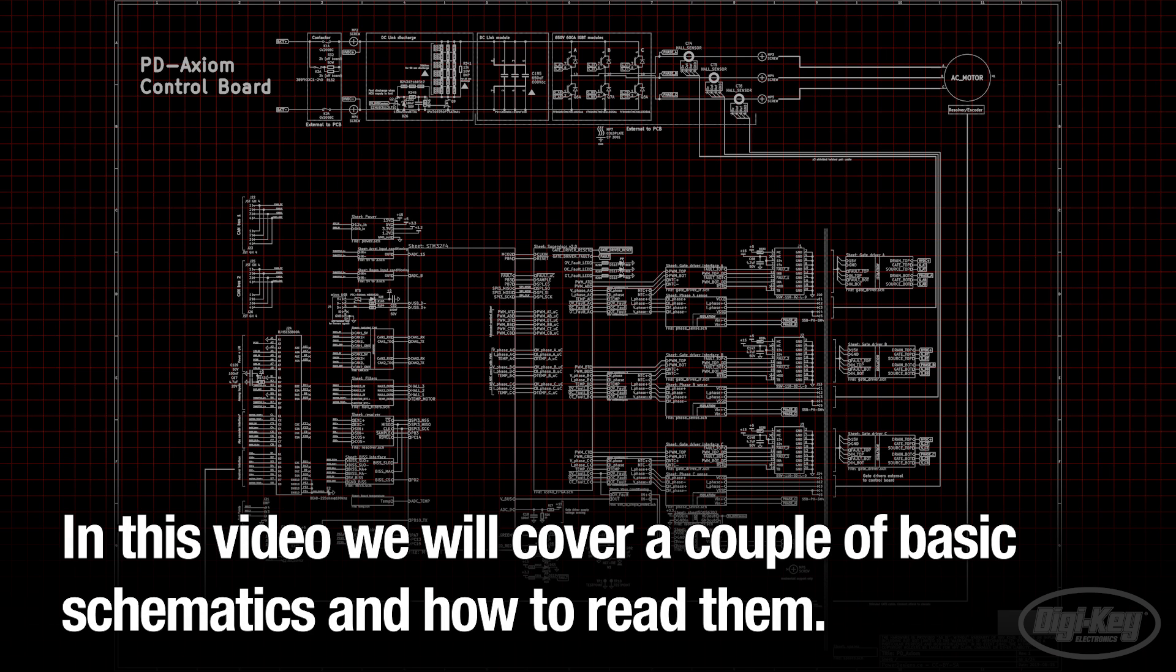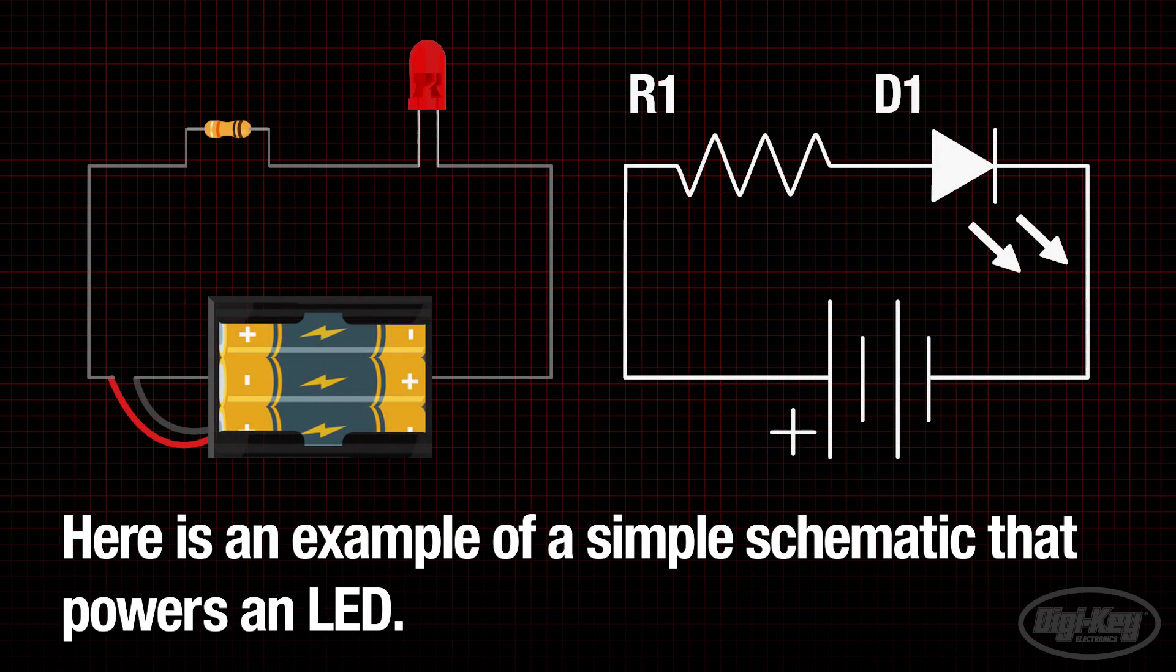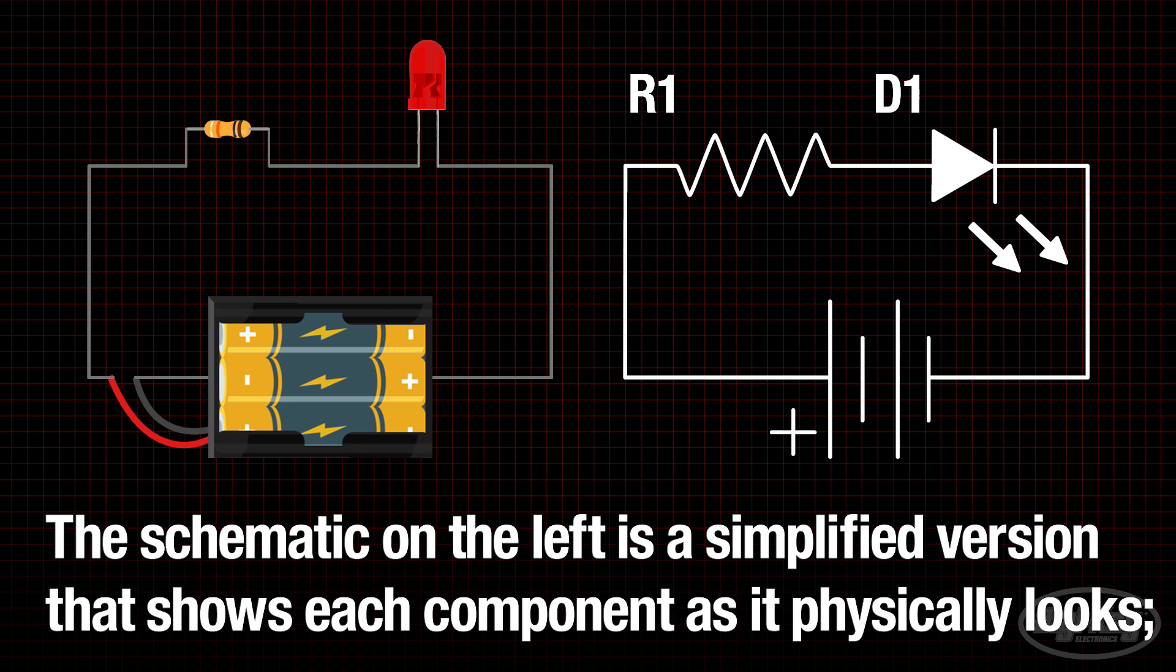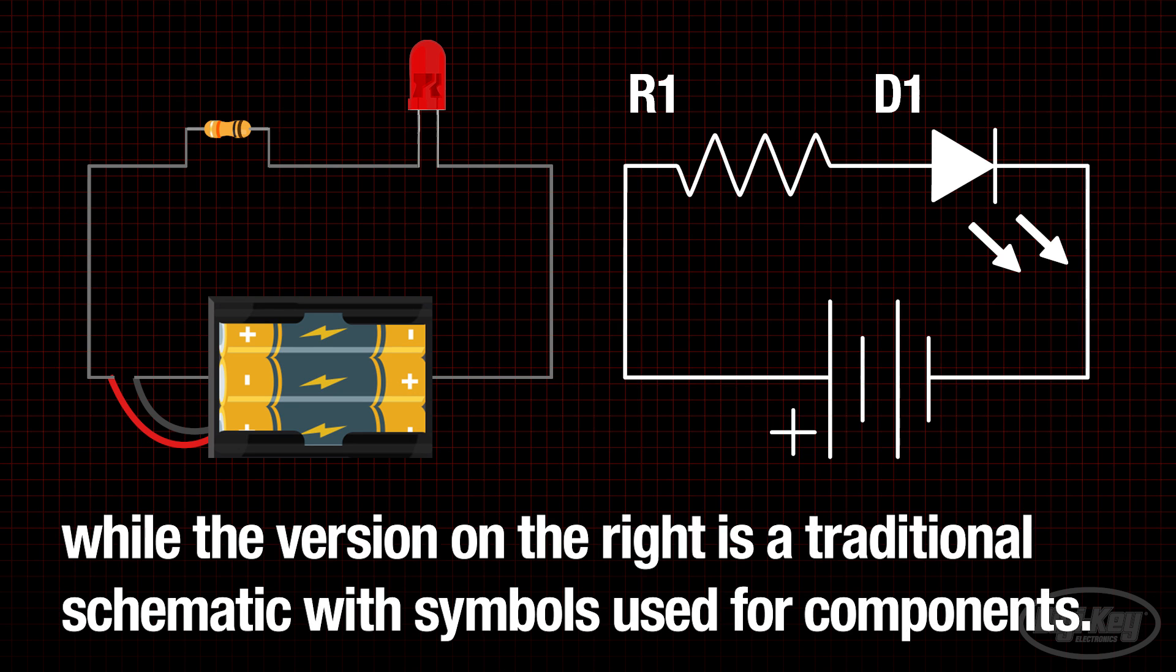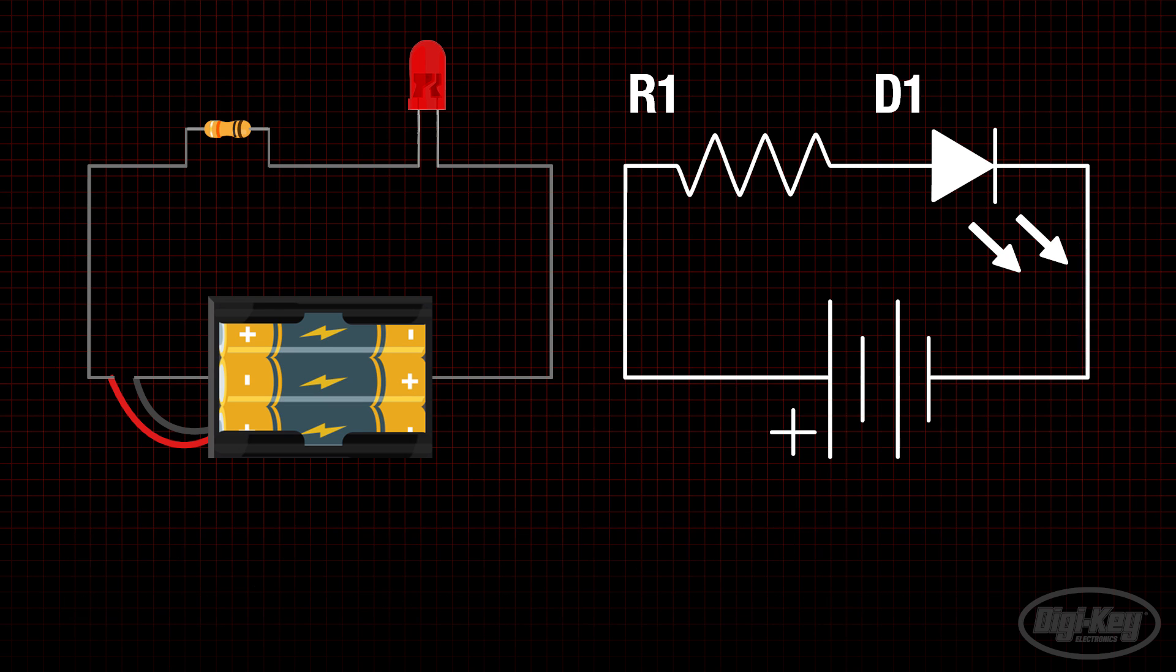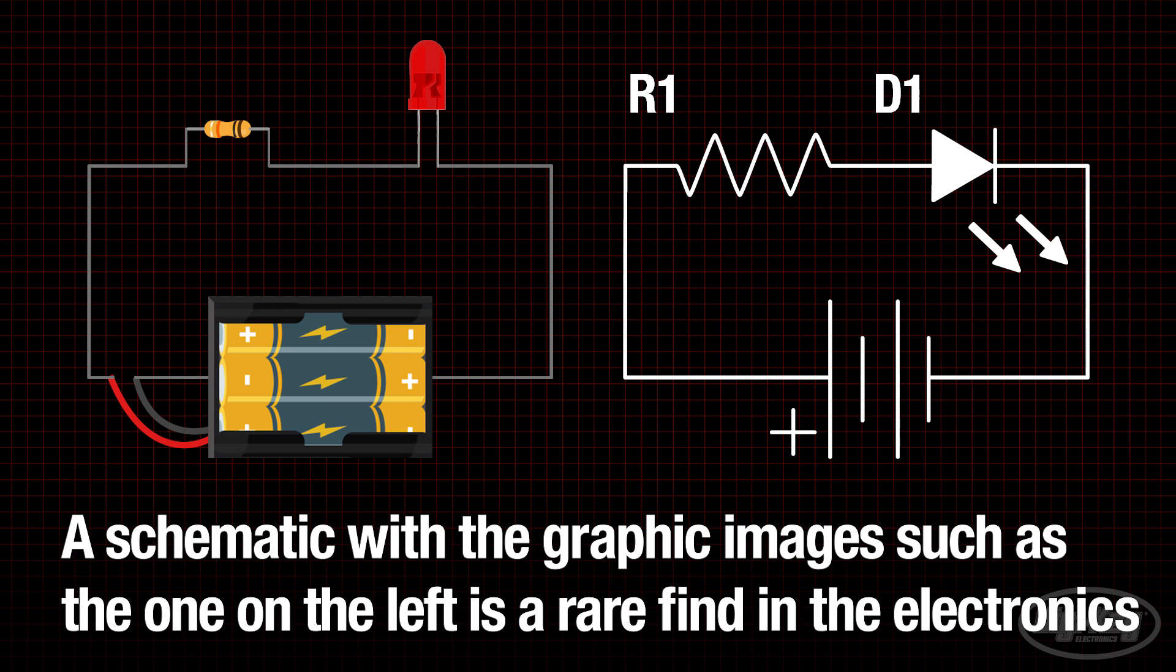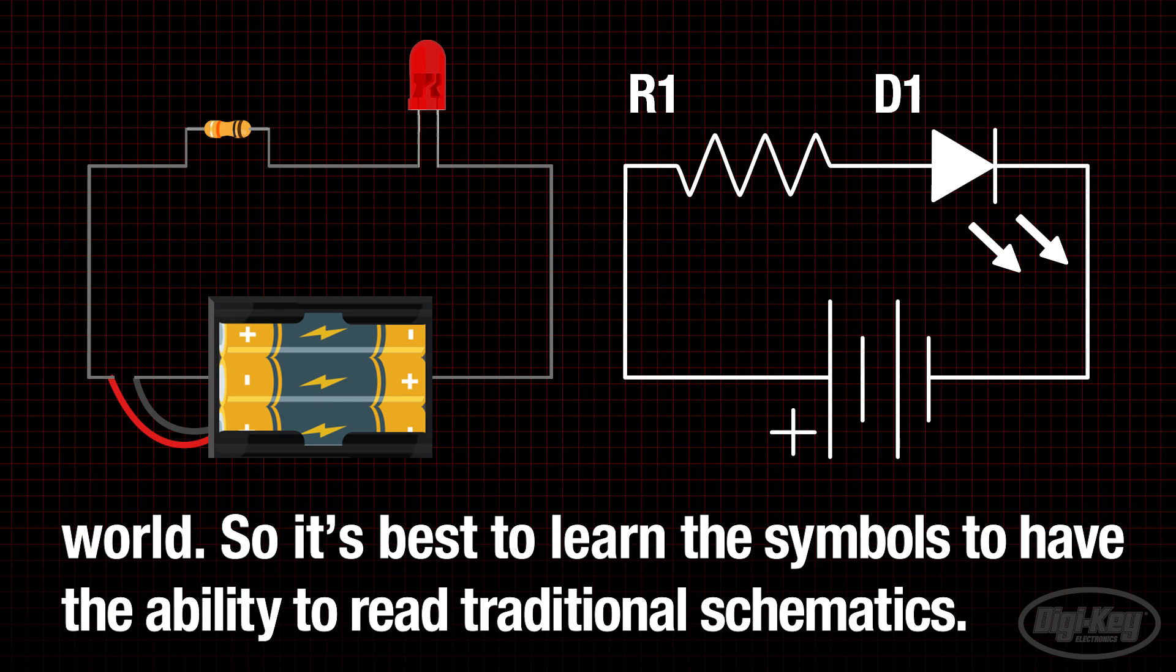In this video, we will cover a couple of basic schematics and learn how to read them. Here is an example of a simple schematic that powers an LED. The schematic on the left is a simplified version that shows each component as it physically looks, while the version on the right is a traditional schematic with symbols used for the components. A schematic with graphic images is a rare find in the electronics world, so it's best to learn the symbols to have the ability to read traditional schematics.